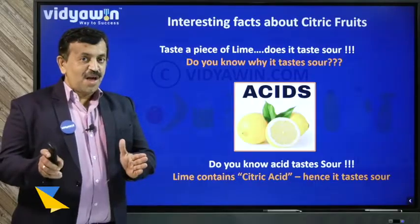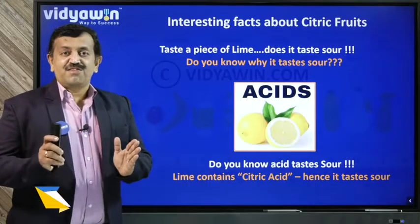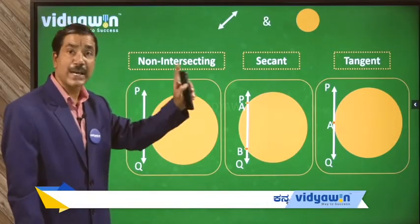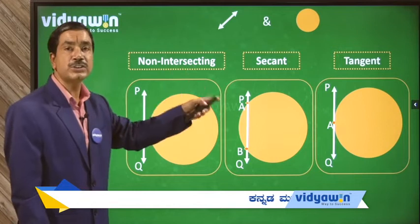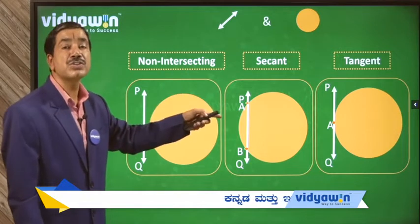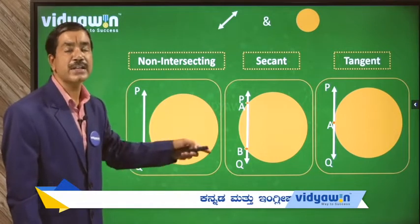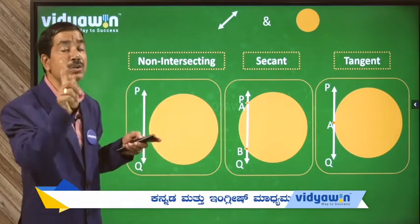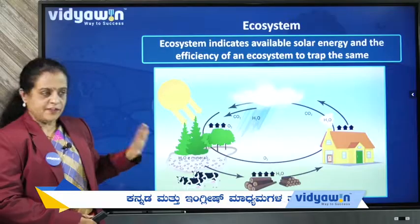Hello winners, welcome to this session. A tangent is also a line which touches or intersects the circle at one and only one point.